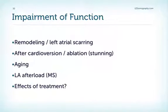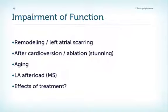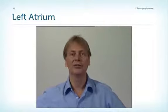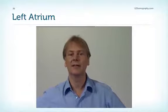There are several reasons for impairment of left atrial function. It is well established that patients with chronic atrial fibrillation show left atrial scarring, causing remodeling and consequent impairment of function. Other reasons include post-cardioversion or ablation, where we see atrial stunning, as well as aging, chronic left atrial afterload such as in mitral stenosis, and even medical therapies such as chemotherapy. This concludes the subchapter on the left atrium, though we will return to it in other chapters where we will see the role the left atrium plays in various disease entities.